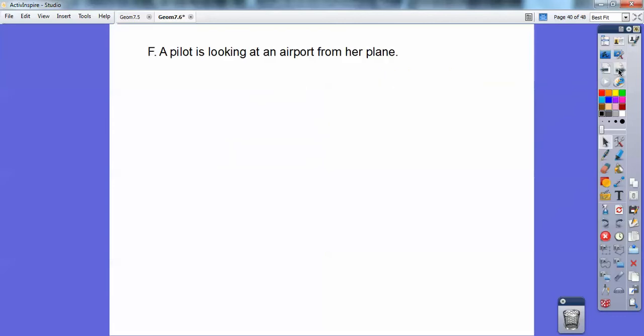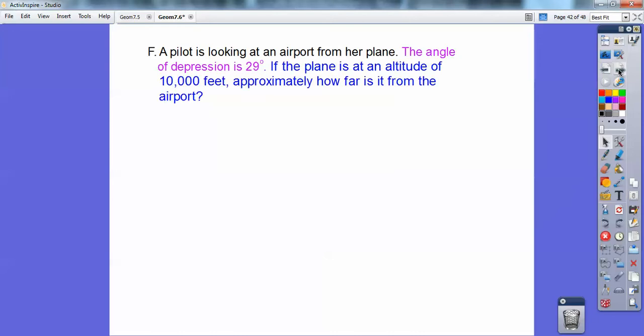So a pilot is looking at an airport from her plane. The angle of depression is 29 degrees. If the plane is at an altitude of 10,000 feet, find approximately how far it is from the airport, the plane, okay? So here's a picture that kind of describes all of that. Here she is, 29 degrees angle of depression, and it says that the plane is 10,000 feet elevation, and so they want to know what's this length right here, okay?